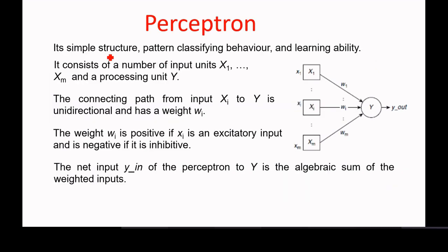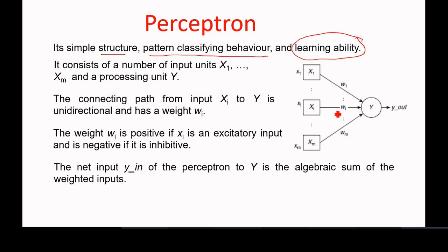The main advantages of the perceptron are: it has a simple structure and it has pattern classifying behavior. Another major important difference between the McCulloch-Pitts neural model and the perceptron is that the perceptron has a learning ability. The weights will get updated — it will learn the weights. That is not the case with the McCulloch-Pitts neural model, where the weights are always the same. Here the weights are different because of the learning ability — it can update the weights.